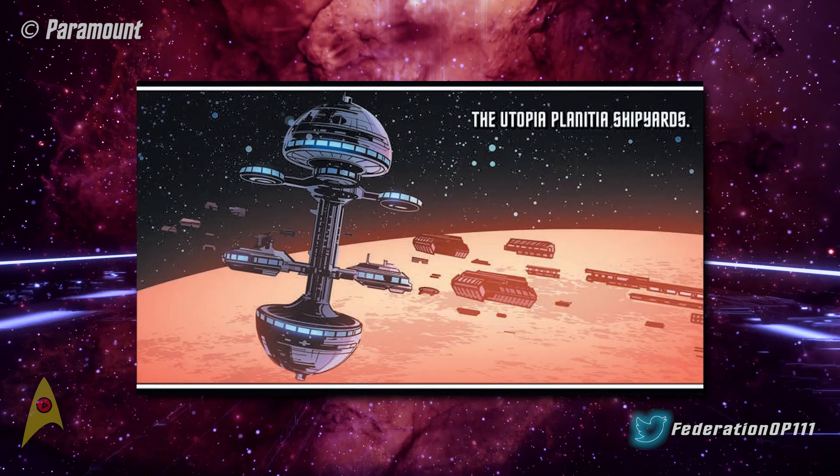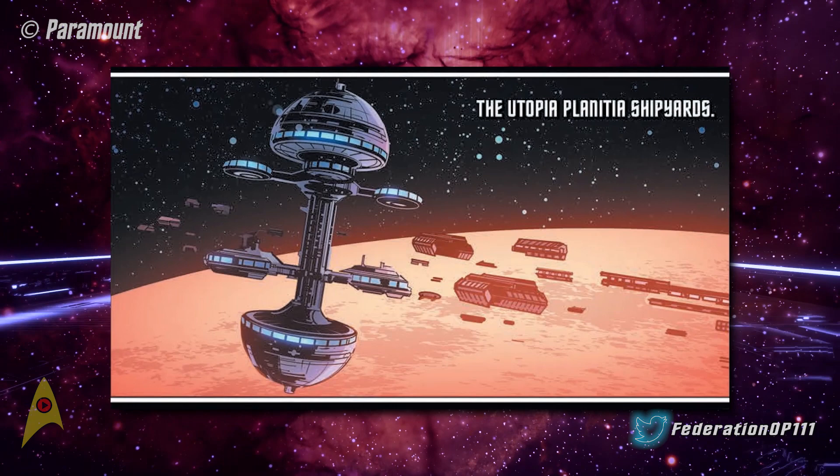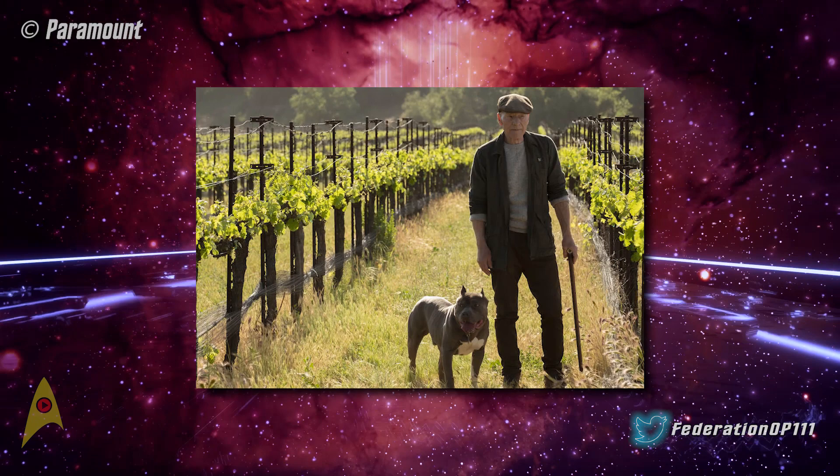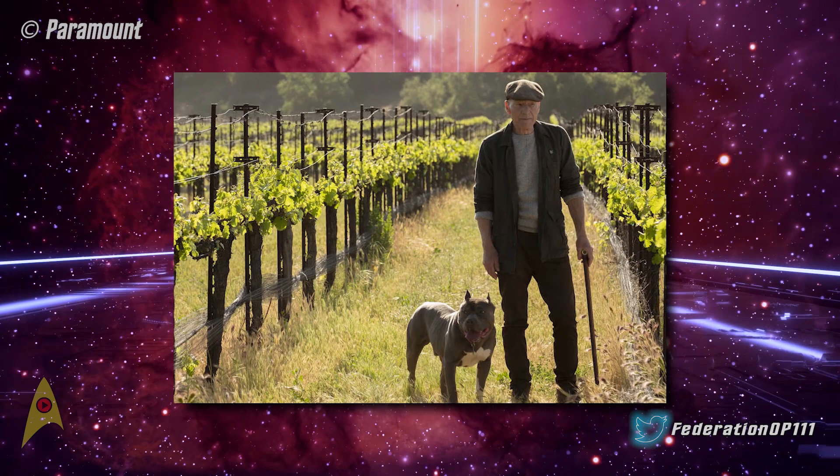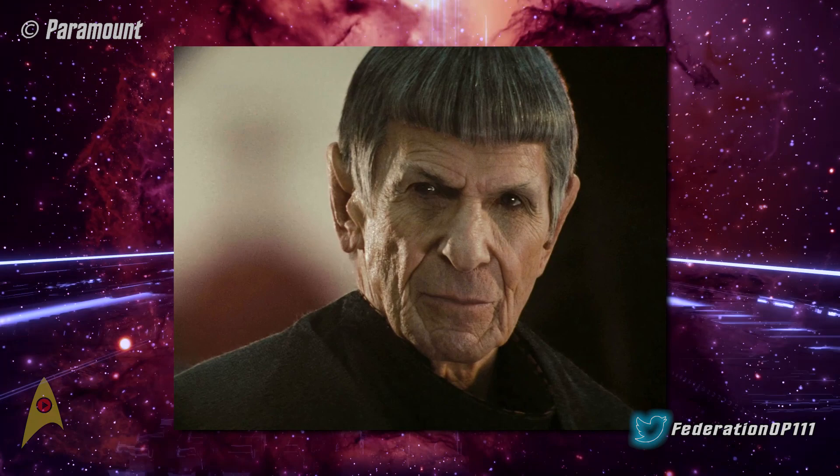In 2385, a group of rogue synthetics destroyed the Utopia shipyards, and with them countless lives and the rescue fleet were lost. Public opinion was already turning against the relief mission, and this was the final straw. The Federation cancelled the mission, and with it Admiral Picard resigned his commission. The evacuation of Romulus was doomed. It now became more important than ever that Spock was successful.